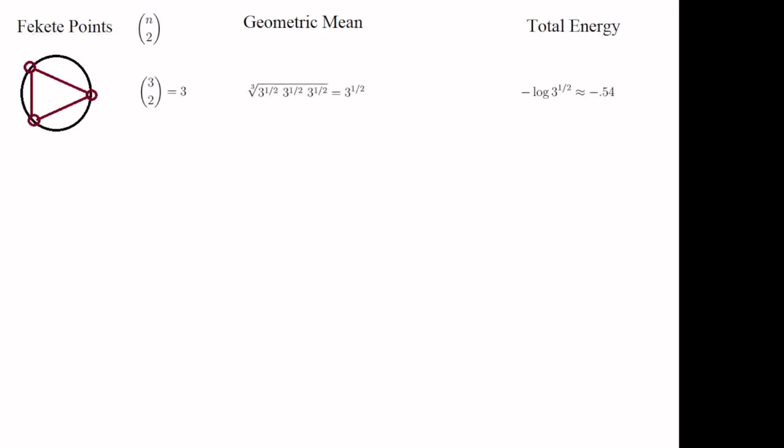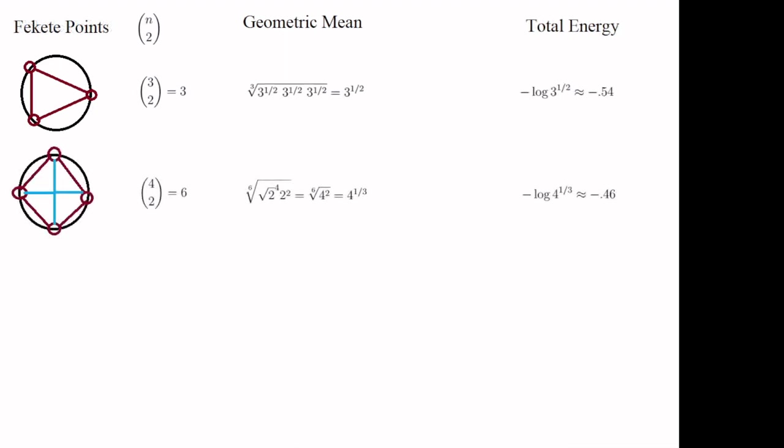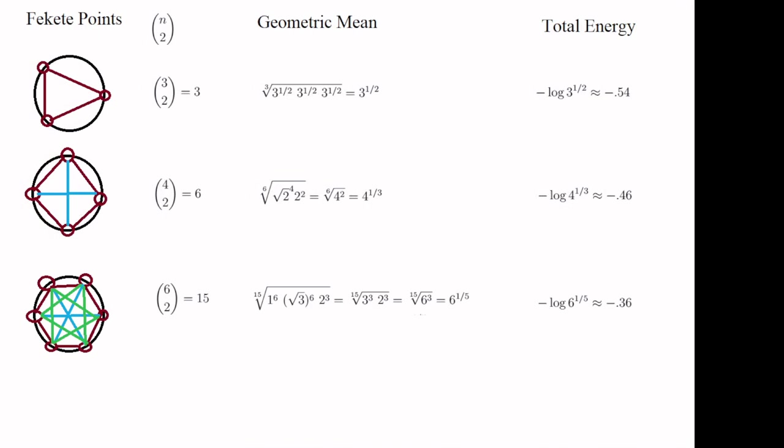We can use a little trigonometry to work out these distances and their geometric mean in a few cases. For three points, we get a triangle where each side is length √3, so the mean is also √3, or 3^(1/2). With four points, we have a square with sides √2 and diameters of length 2. This gives a mean of 4^(1/3). I'm skipping five points because I don't know the cosine of 72 degrees, and I'm guessing you don't either.